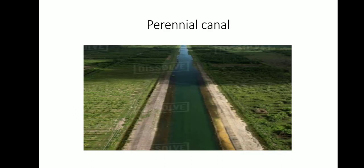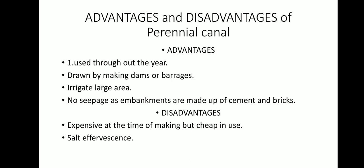Perennial canal — it can be used throughout the year and always has water. It is drawn by making dams or barrages constructed on different rivers, and irrigates a larger area than the inundation canal. There is no seepage because embankments are made of cement and concrete. Disadvantage: it is expensive to construct initially, though cheaper to use once operational. Salt efflorescence can occur when water remains in the farm for longer duration and evaporation leaves salts, affecting soil fertility.